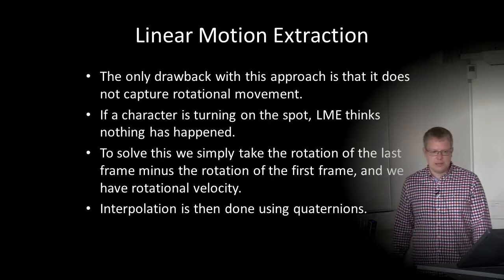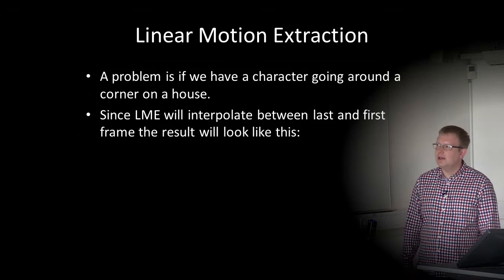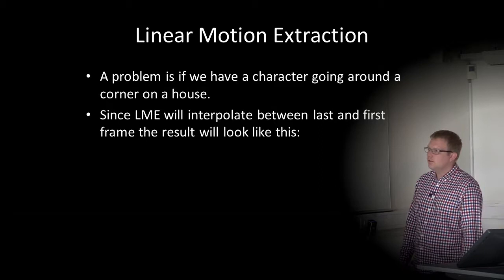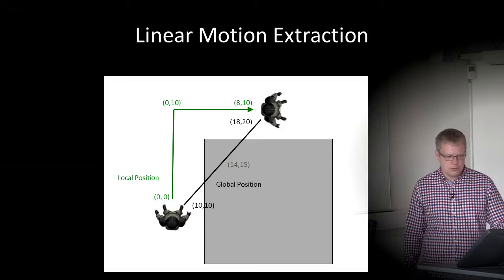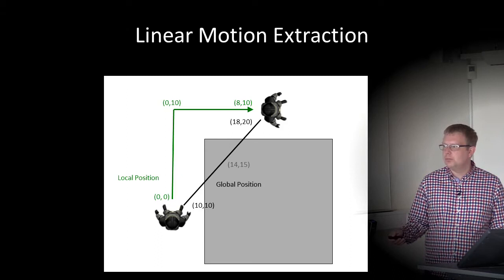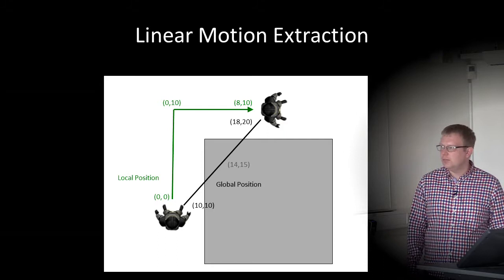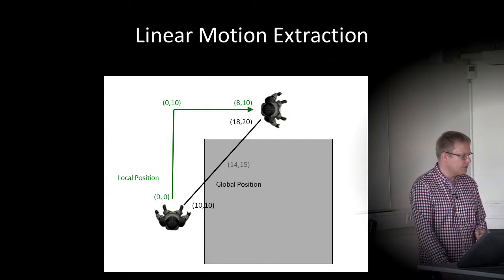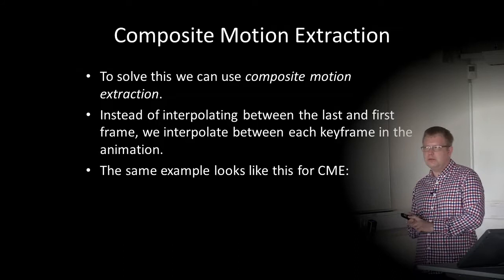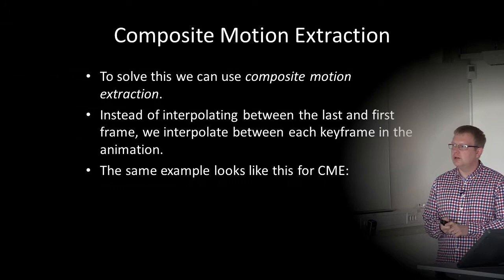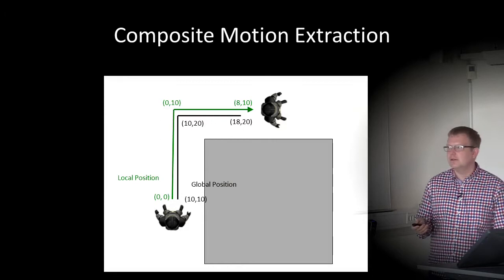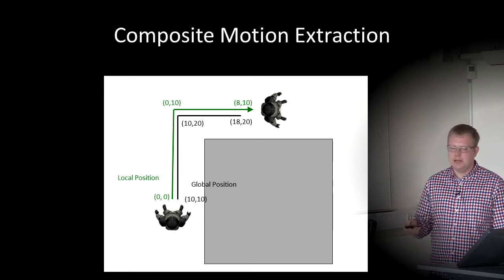The problem remains if a character goes around a corner: linear motion extraction interpolates a straight line between the first and last frame, which would pass through the house, causing the character to collide with it. To solve this, we can use composite motion extraction (CME): instead of interpolating between the last and first frame, we interpolate between each keyframe in the animation. The same example would then look correct — we have a keyframe at the turn and interpolate between the different keyframes.